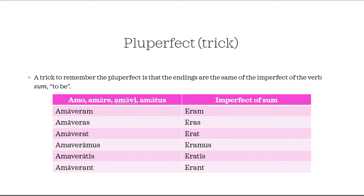Here is a trick to learn the pluperfect more effectively: the endings of the pluperfect actually correspond perfectly to the imperfect of the verb sum, 'to be.' As you can see, the endings are exactly the same: eram, eras, erat, eramus, eratis, erant. So the trick is that if you recognize the endings are the same as the imperfect of the verb 'to be,' that will be a pluperfect. If you know the imperfect of sum, you also know the pluperfect — you don't have to memorize additional things.